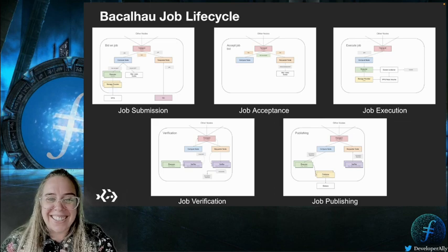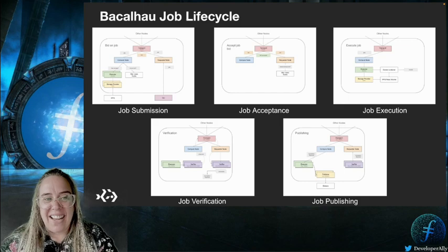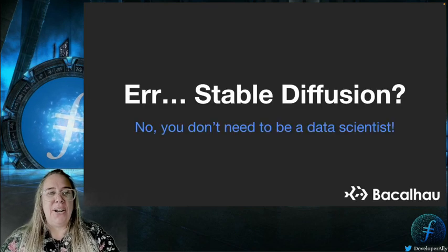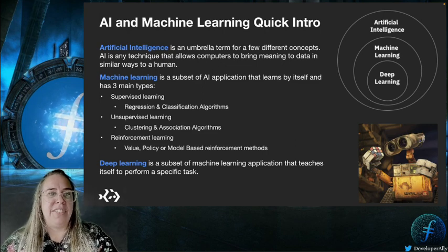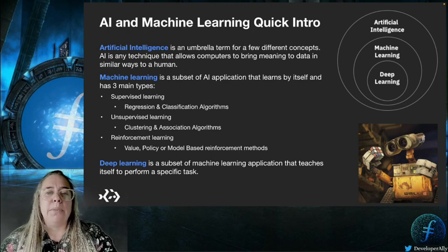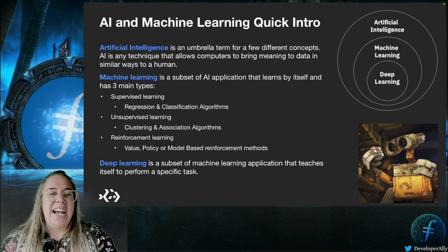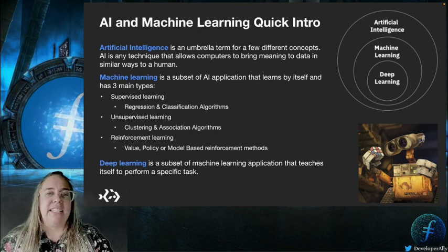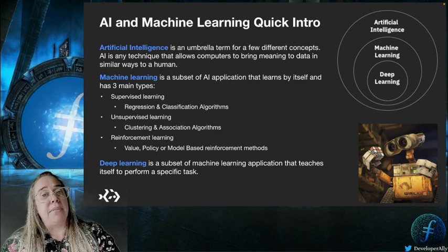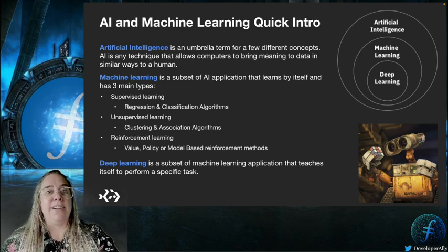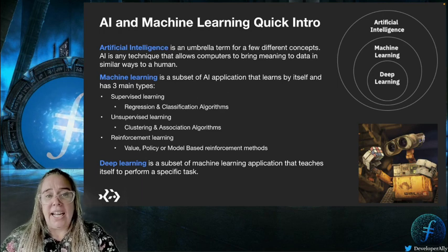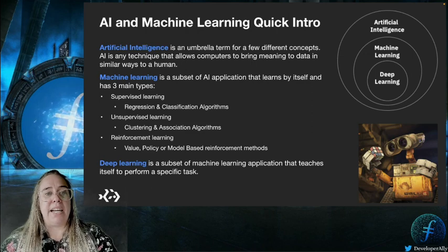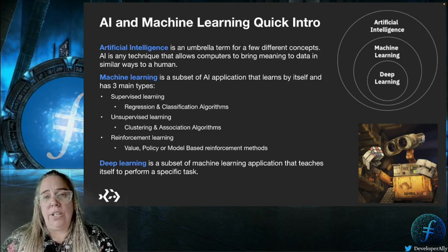Now that we understand what's going on under the hood, let's take a quick look at what stable diffusion is. Machine learning is a subset of artificial intelligence focused on having computers provide insights without explicitly programming them. There are three main types: supervised learning, unsupervised learning, and reinforcement learning. ChatGPT, for example, is a large language model based on reinforcement learning. Deep learning is a category within machine learning — stable diffusion falls under it — and it's a subset that teaches itself to perform a specific task.